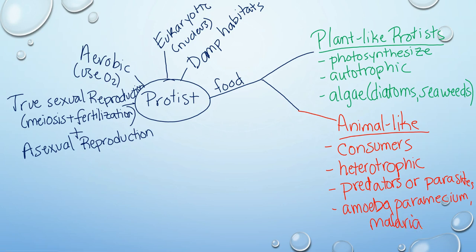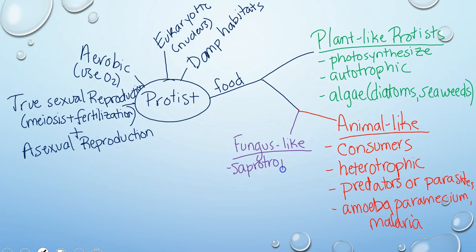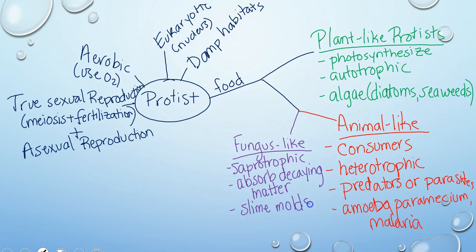Our last group is our fungus-like protists. These also get their food from other organisms but in a slightly different manner. Fungus-like protists are what we call saprotrophic, meaning they absorb decaying matter. This includes things like slime molds. They differ from true fungi in that they typically do have centrioles, whereas real fungi don't, and their cell walls are different from the cell walls of fungi.